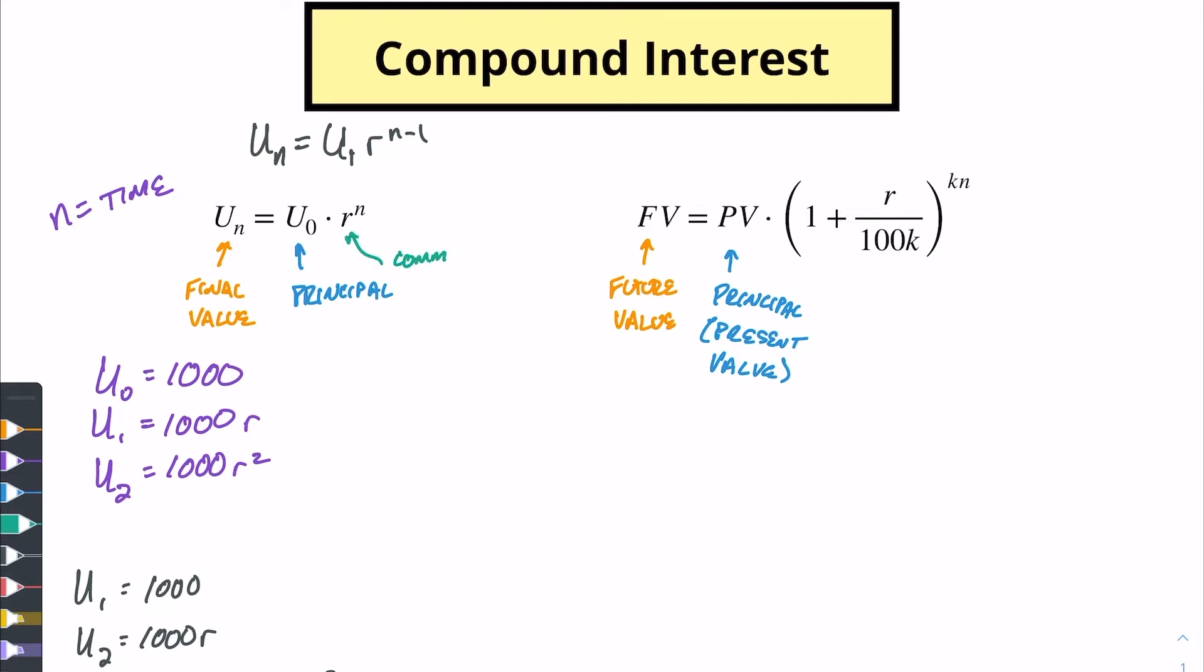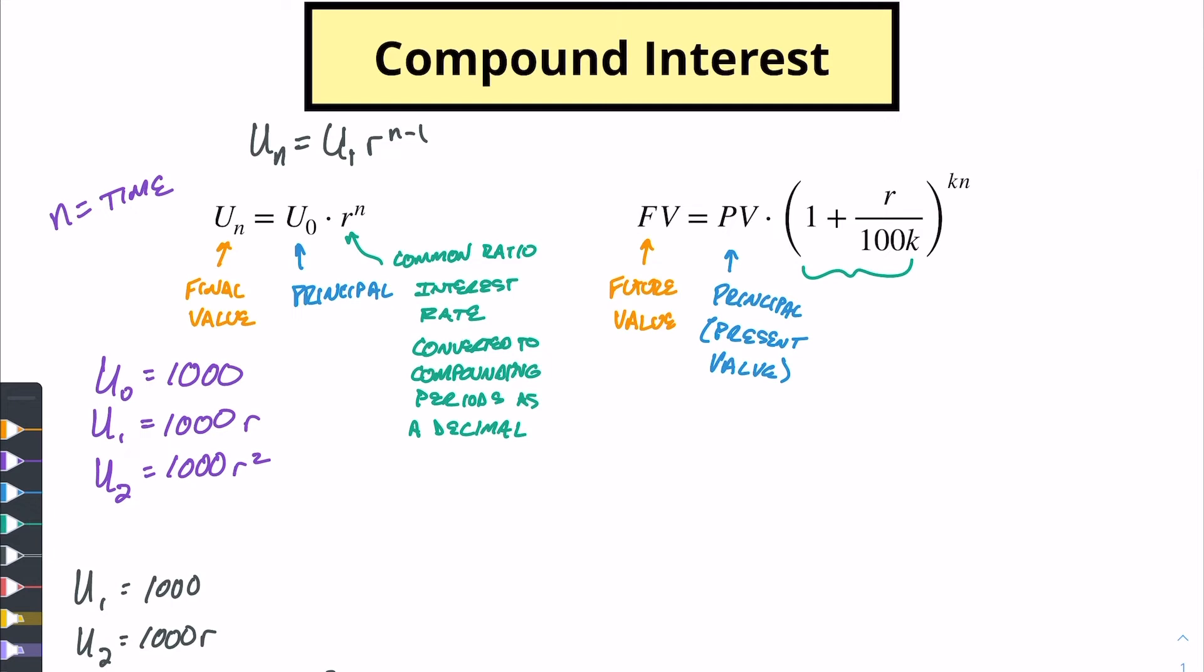Then we have our common ratio. Our common ratio over here is really the rate. This is our interest rate converted to compounding periods as a decimal. And so that might seem like a big jump here but you're going to see this is probably things that you typically do on your own. This is going to be stuff that you naturally do. So all of this right here is this whole process. This is converting your interest rate to a decimal. This is converting interest rate to compounding rates as a decimal.